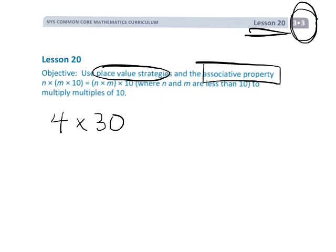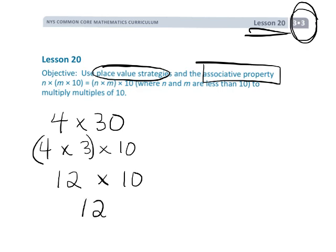So the idea would be that 4 times 30 can be rewritten as 4 times 3 times 10. Then you can use the associative property to say 4 times 3 is 12, and then 12 times 10 equals 120.